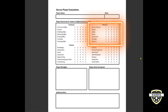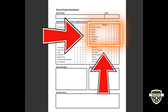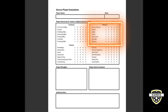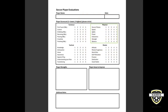The third pillar of the soccer player evaluation development sheet really goes around the physical attributes, and those physical attributes can be seen here. We're going to talk about each of these, although these are probably things that need less explanation than the technical and tactical attributes, but we'll go through the physical aspects so that you can correctly rate yourself from one to five in each of these areas.